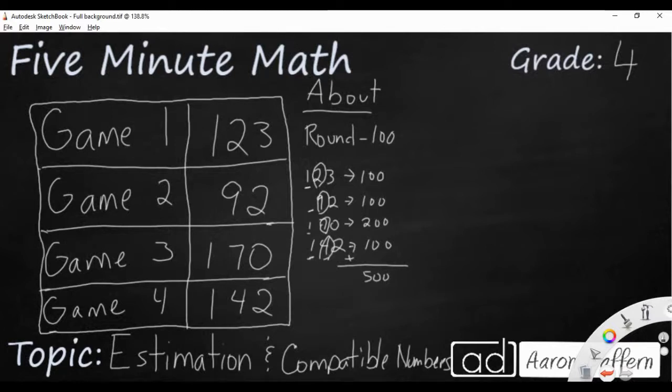Let's see what happens if we round to the tens place. That is usually going to be a little bit more accurate, so I'm going to take my same numbers: 123, 92, 170, and 142. So if I'm going to round to the tens place, that's going to be a little bit better.